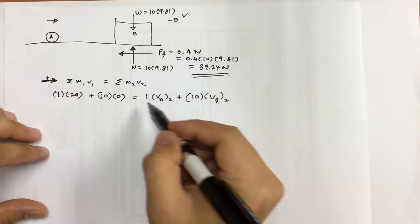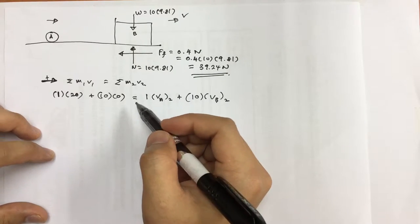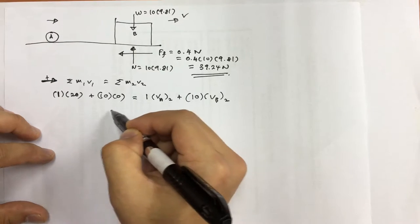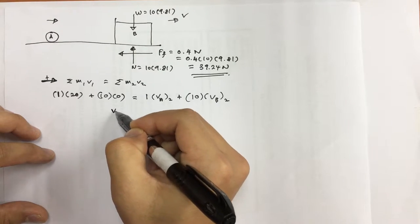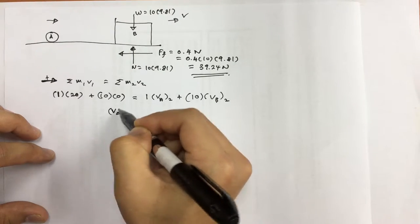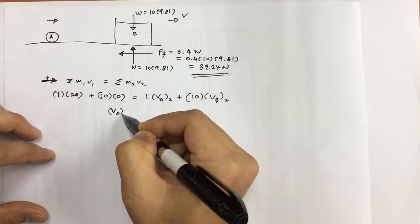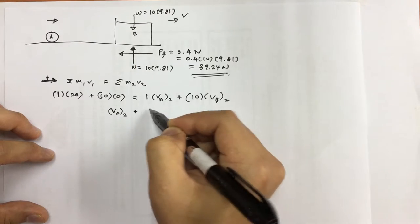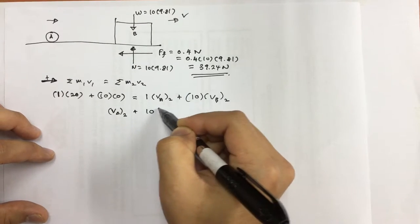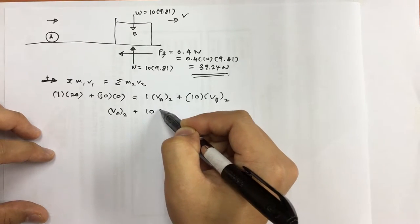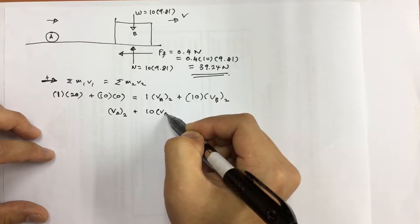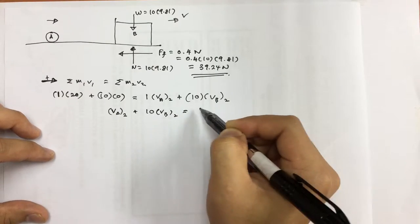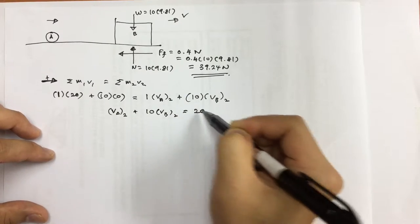Collecting all the terms, we get our first equation: the final velocity of ball A plus the final velocity of block B after impact equals 20.